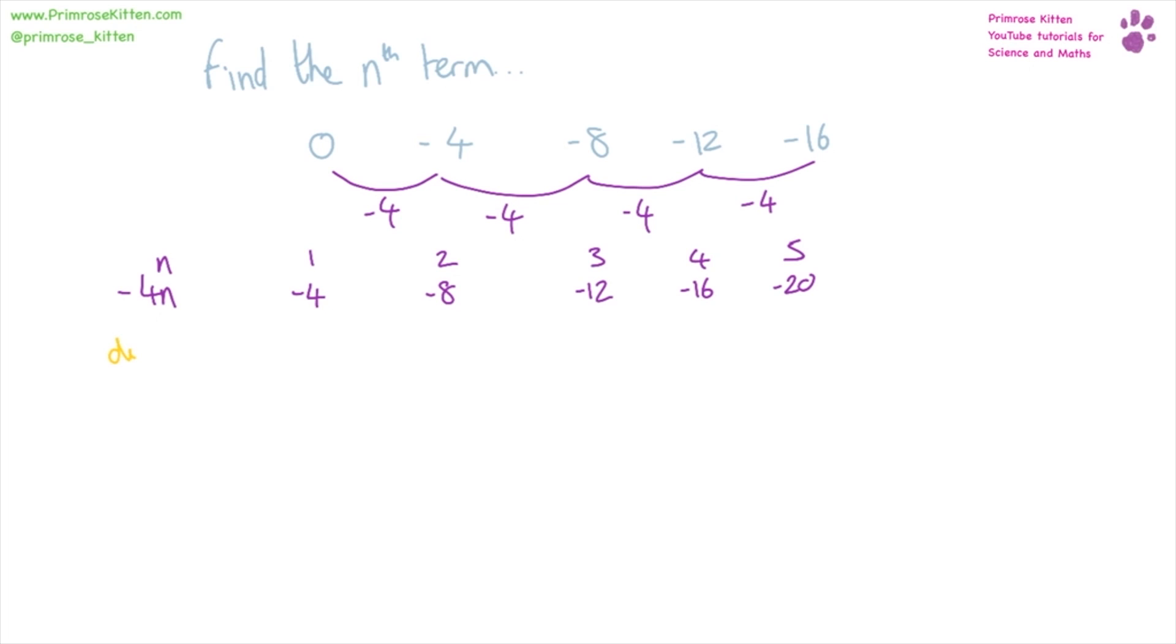Now we need to work out the difference. That is the difference between what we have so far, so minus 4n and the sequence.